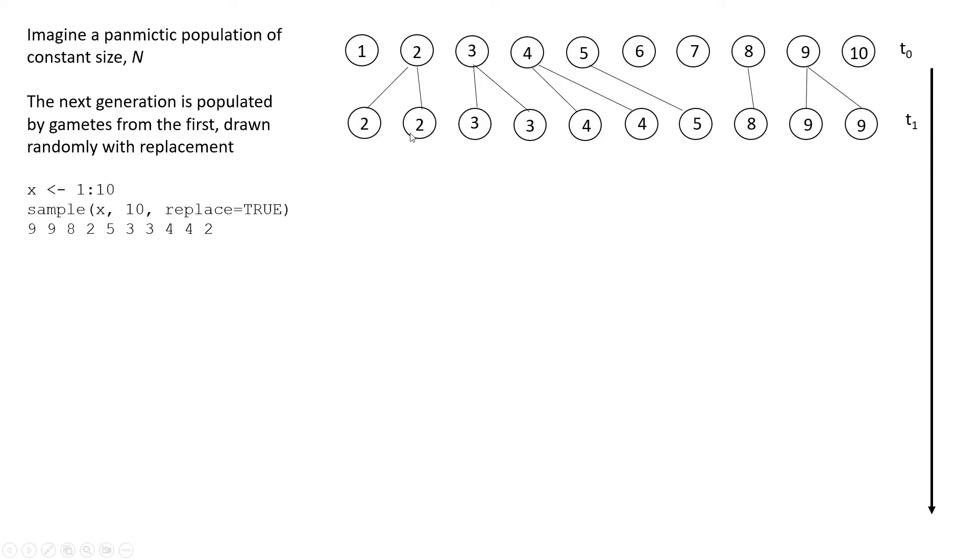So you can notice what it's kind of done here. We get two draws of two, but we don't get any draws from one, two from three, two from four, one from five, none from six or seven, one from eight, two from nine, and none from 10. So just in this first generation, we have lost several lineages.